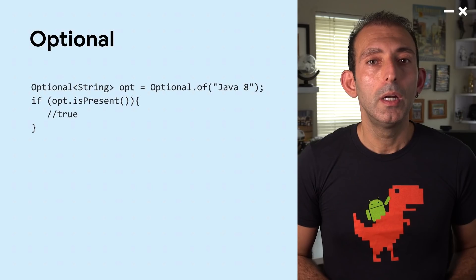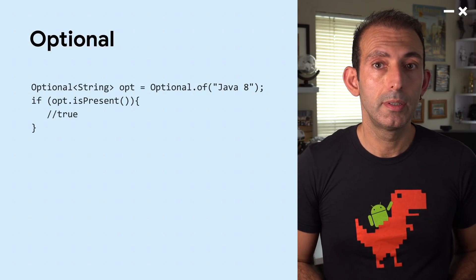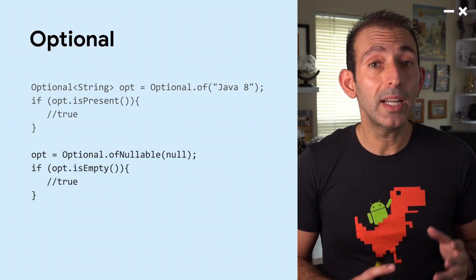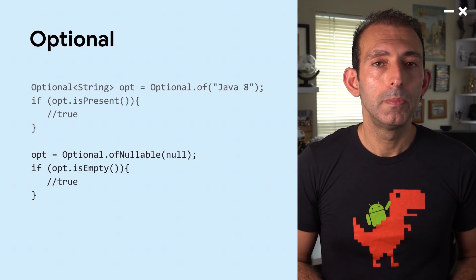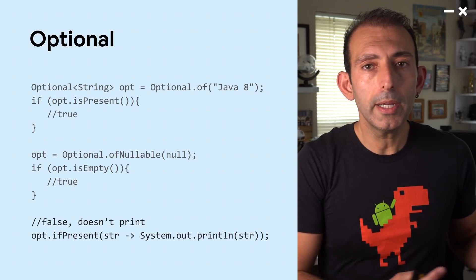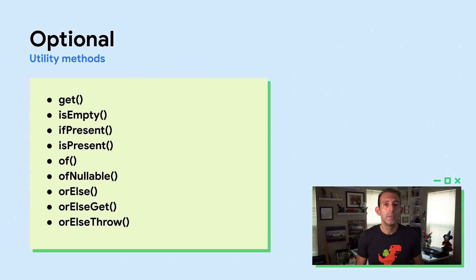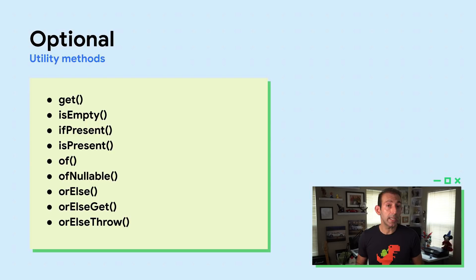Another interesting addition to the java.util package is the Optional class and its primitive counterparts — OptionalInt, OptionalLong, and OptionalDouble. Optional helps you work with real types instead of null references. Optional can represent null with the absence of a value. You can use the utility methods to handle values as available or not available instead of checking for null. The Optional class has a variety of utility methods such as orElse, orElseThrow, filter, and more, which help you handle null checks and null cases easily.